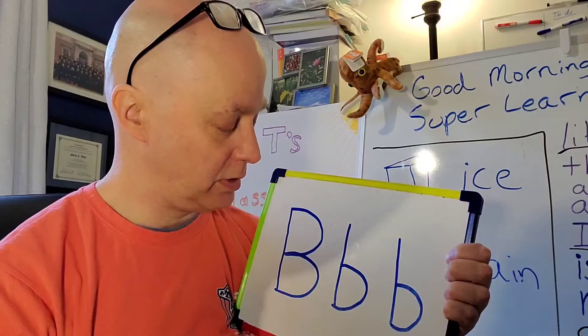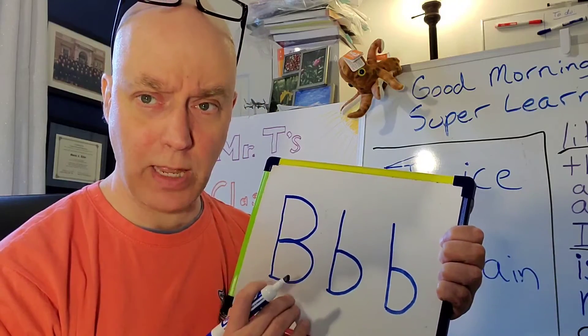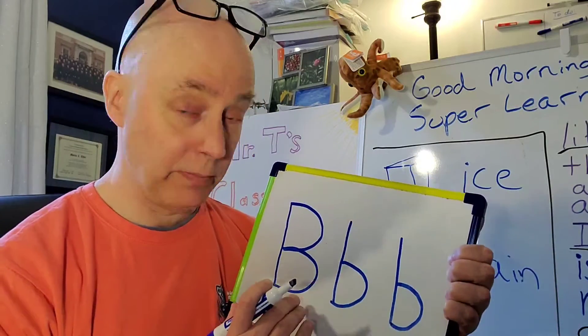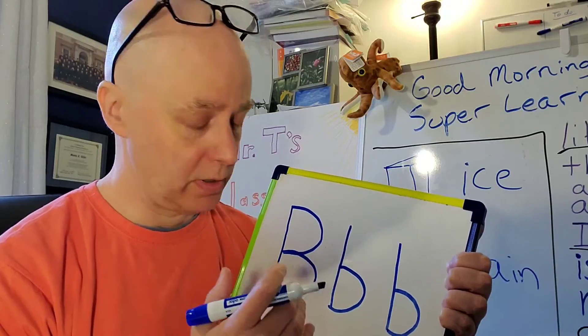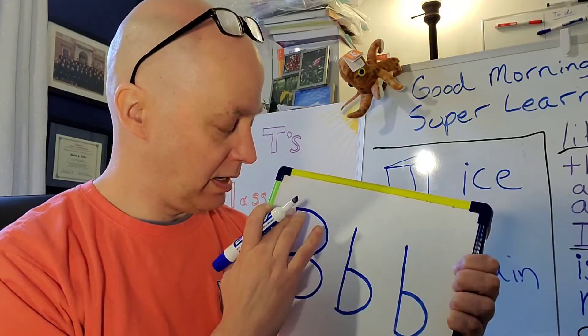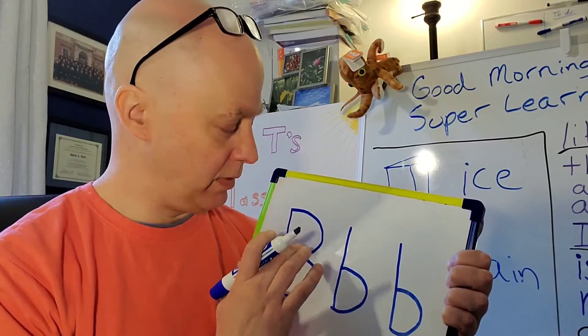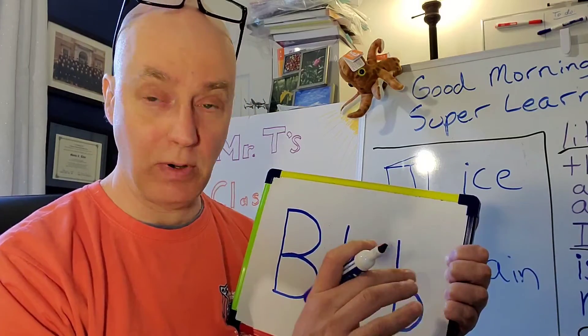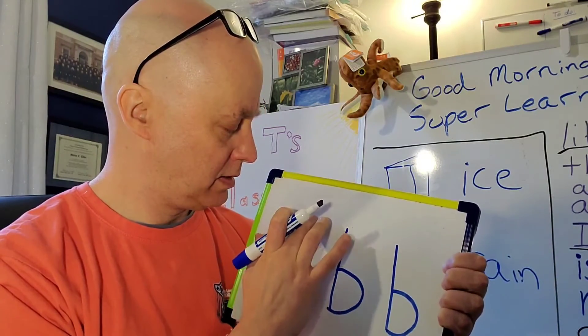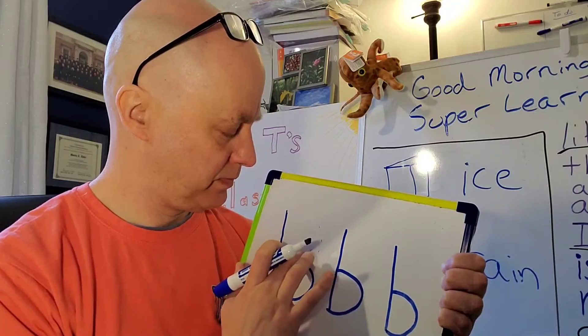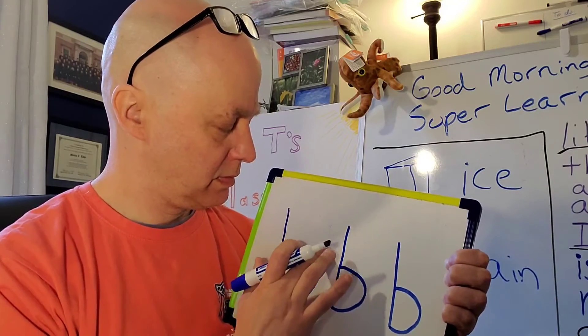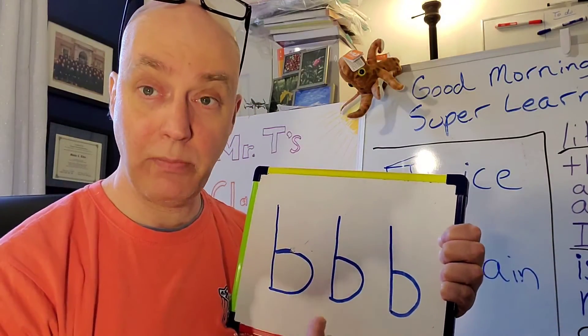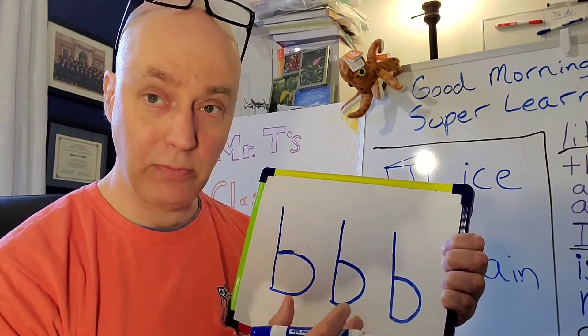I also want you to notice this. To help you with your lowercase B and with your capital B, I've written my uppercase B right here. I know that it's facing the right way. And I'm just going to erase this top part. And you'll notice, my B is now facing the right way.